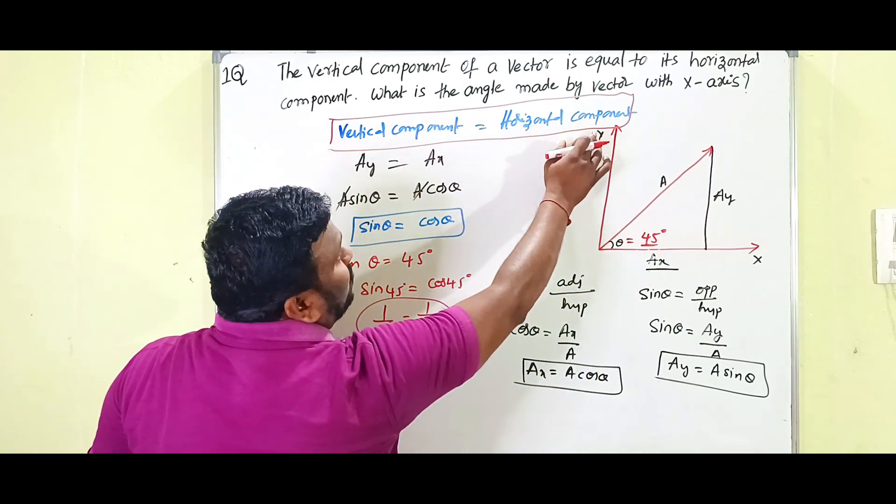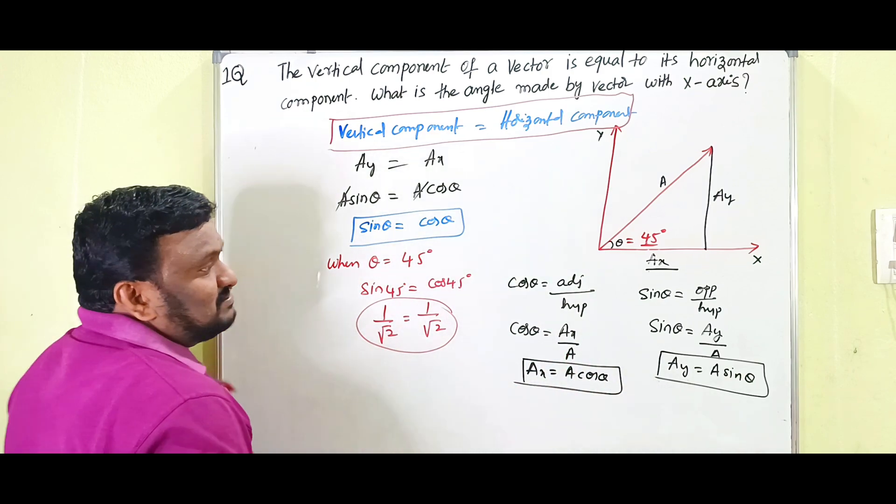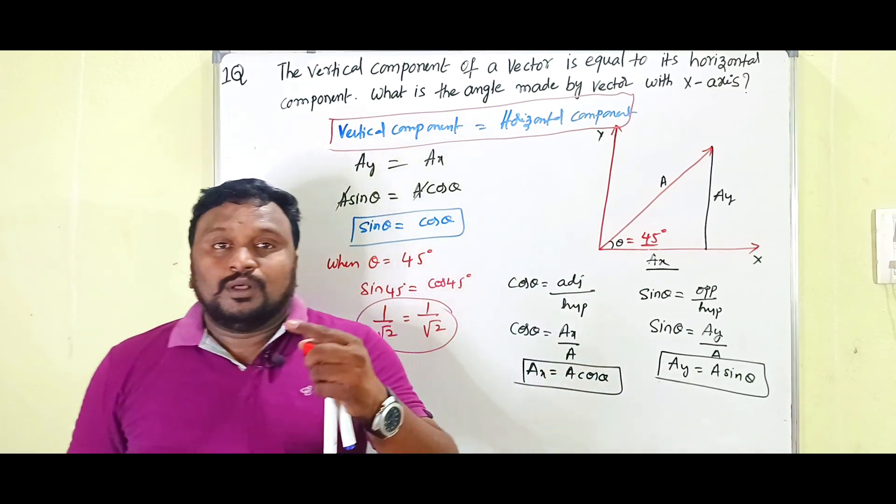So the answer is: vector A makes 45 degrees with the x-axis. Only when theta equals 45 degrees does the vertical component equal the horizontal component. This is the two-mark answer.